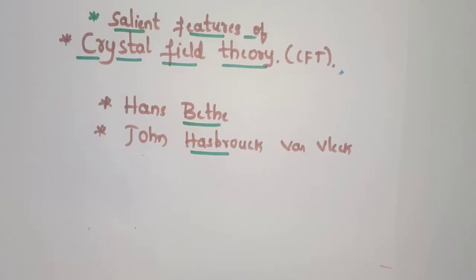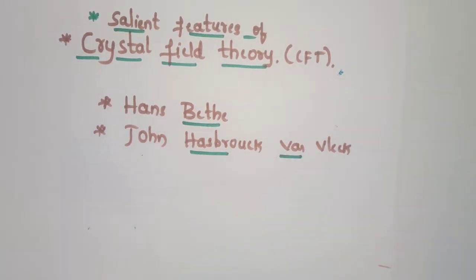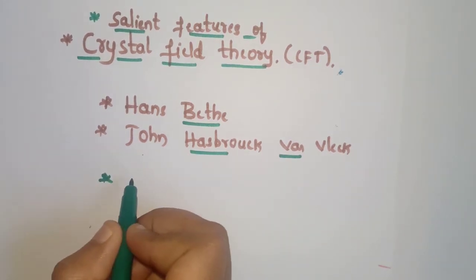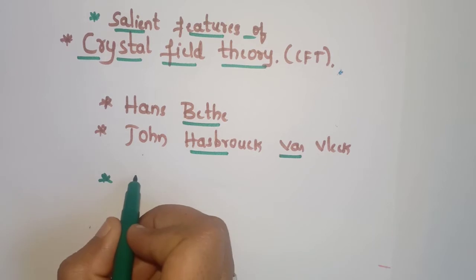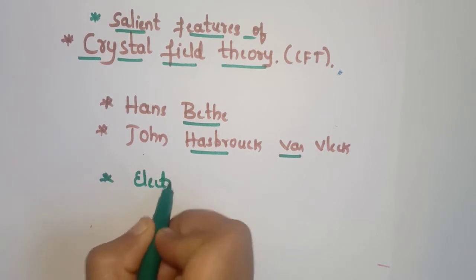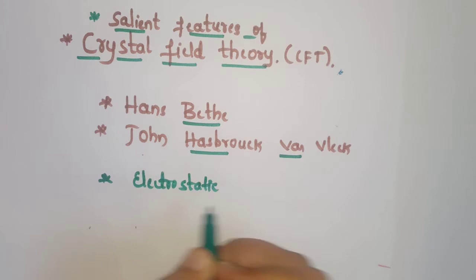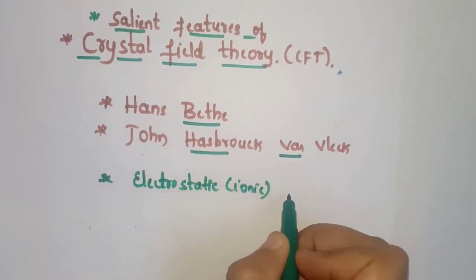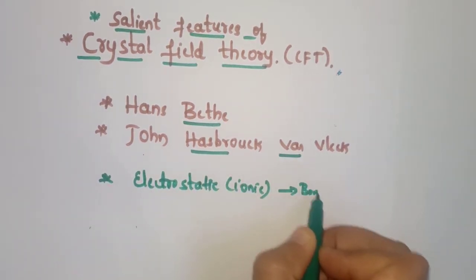In this video we are going to learn about the salient features of Crystal Field Theory. This theory was developed by Ansbeth and John Hasbrock Van Vleck. This theory involves an electrostatic approach — that is, an ionic approach — to the bonding in complexes.